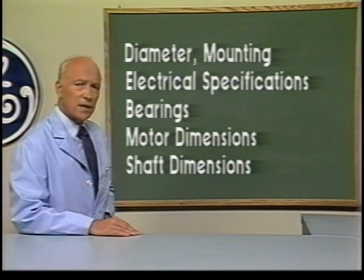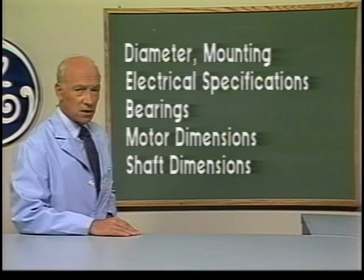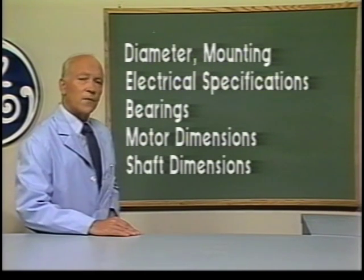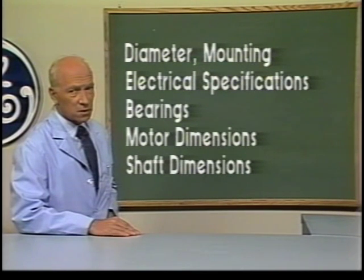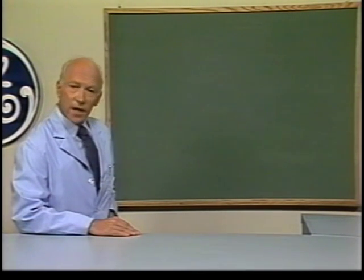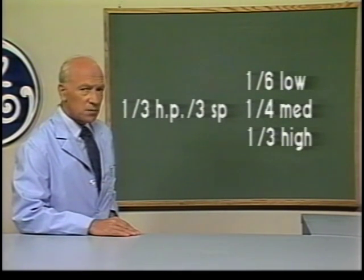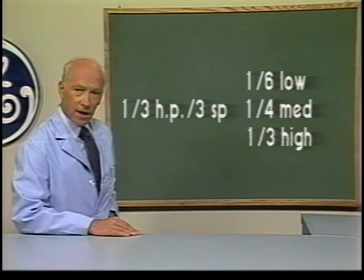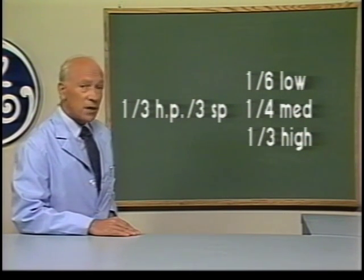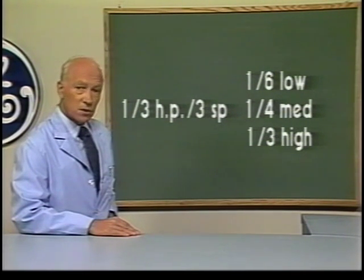To review the checklist: diameter, mounting, electrical specifications, bearings, motor dimensions, and shaft dimensions. The chances are good that you will find a good replacement. Even if you can't find an exact duplicate, many customers will be more than satisfied with a legitimate substitution. For example, if you need to replace a one-third horsepower single-speed motor but don't have one in stock, look at your multiple-speed motors. A one-third horsepower three-speed motor typically has one-sixth horsepower at low speed, one-quarter at medium, and one-third at high. By taping the leads for the lower two speeds, you now have the one-third horsepower single-speed motor you need.